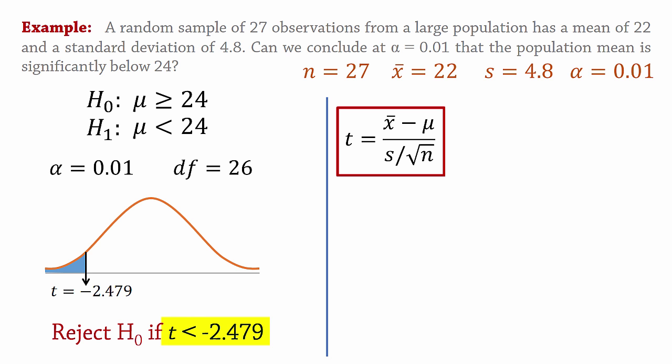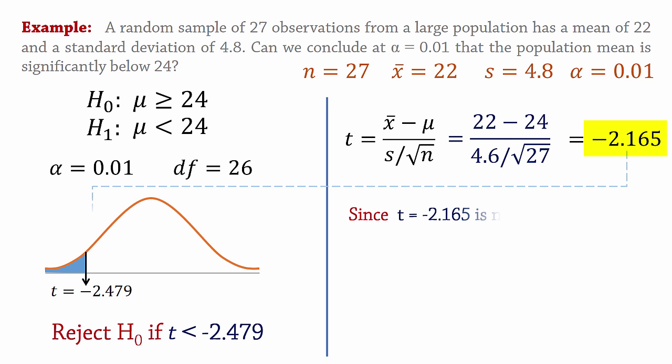Now substituting the values into the formula, we calculate the test statistic as negative 2.165. And as you can see here, the test statistic is not less than negative 2.479, or it is not in the rejection region. So we fail to reject the null hypothesis.